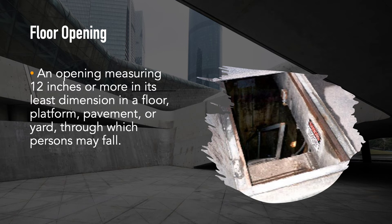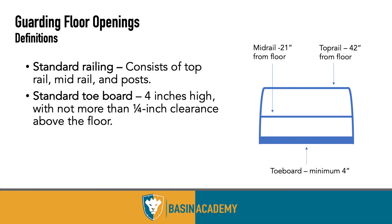Floor openings of 12 inches or more — where a person may fall — must be guarded. To properly guard a floor opening, you need a top rail, mid rail, and toeboard. The standard toeboard is four inches high with not more than a quarter-inch clearance above the floor. A common question is whether a two-by-four setup can be used — technically yes, but it must withstand 200 pounds of outward force at any point along the system, which usually makes a purpose-built guardrail more practical.